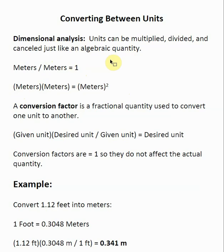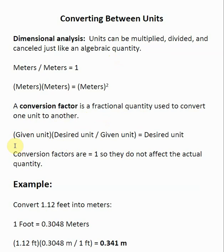For right now, we're going to be using dimensional analysis to allow us to convert between one unit and another. To go from one unit to another, we need a conversion factor. A conversion factor is a quantity used to convert one unit to another — generally something that you look up. With this, you start with a given unit and multiply by a conversion factor.